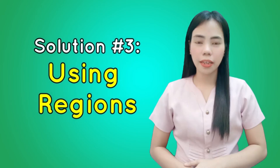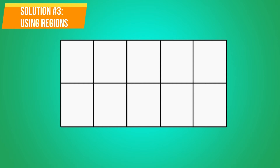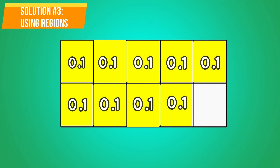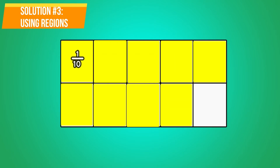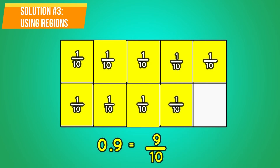The third solution is by using regions. Let's draw a rectangle and divide it into 10 equal parts. Shade 9 parts to represent the decimal number 9 tenths. Using the model, we can also write the shaded part as a fraction. 9 out of 10 parts can be written as 9 over 10 in fraction form. Thus, 9 tenths in decimal form is equal to 9 tenths in fraction form.